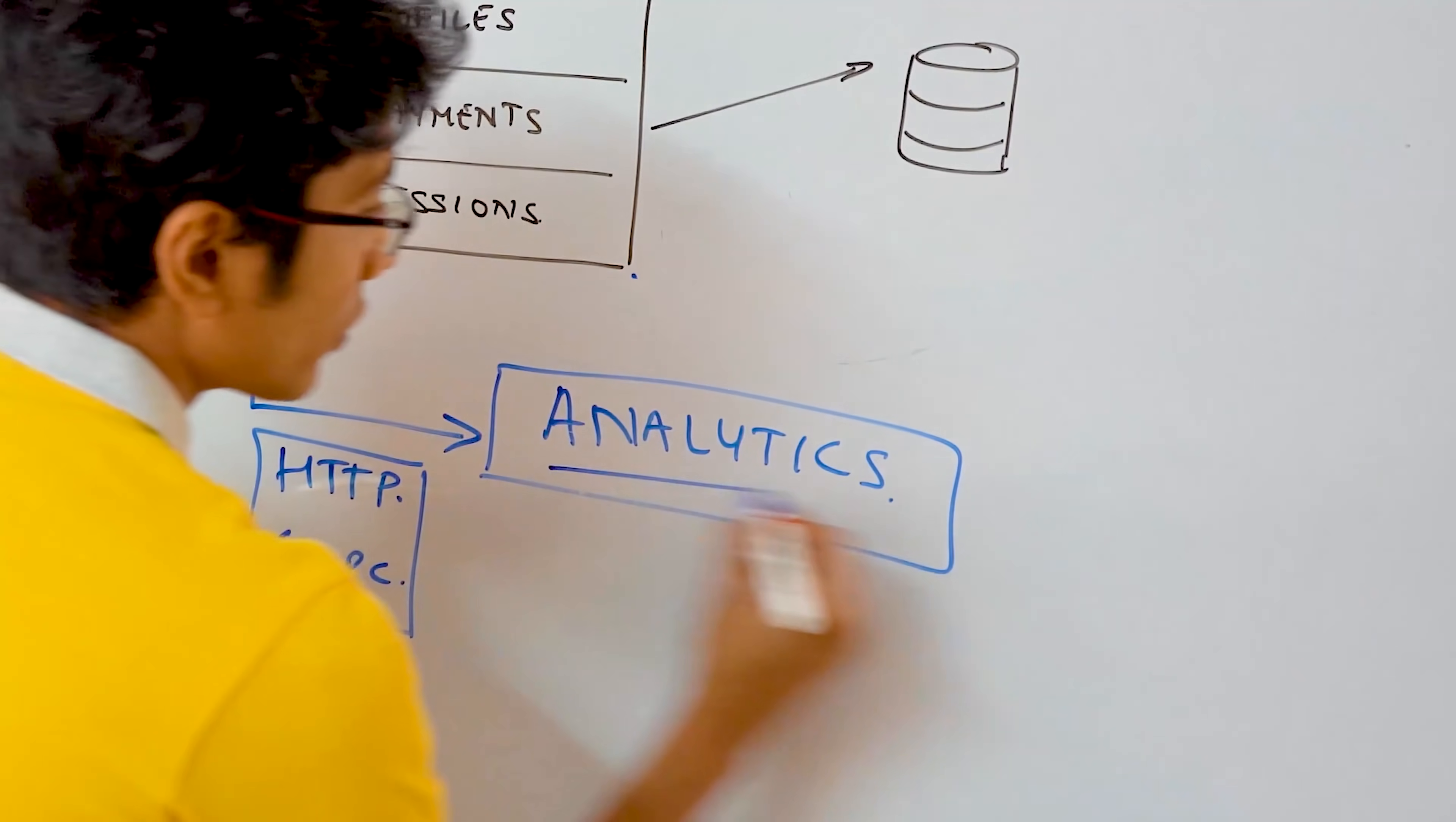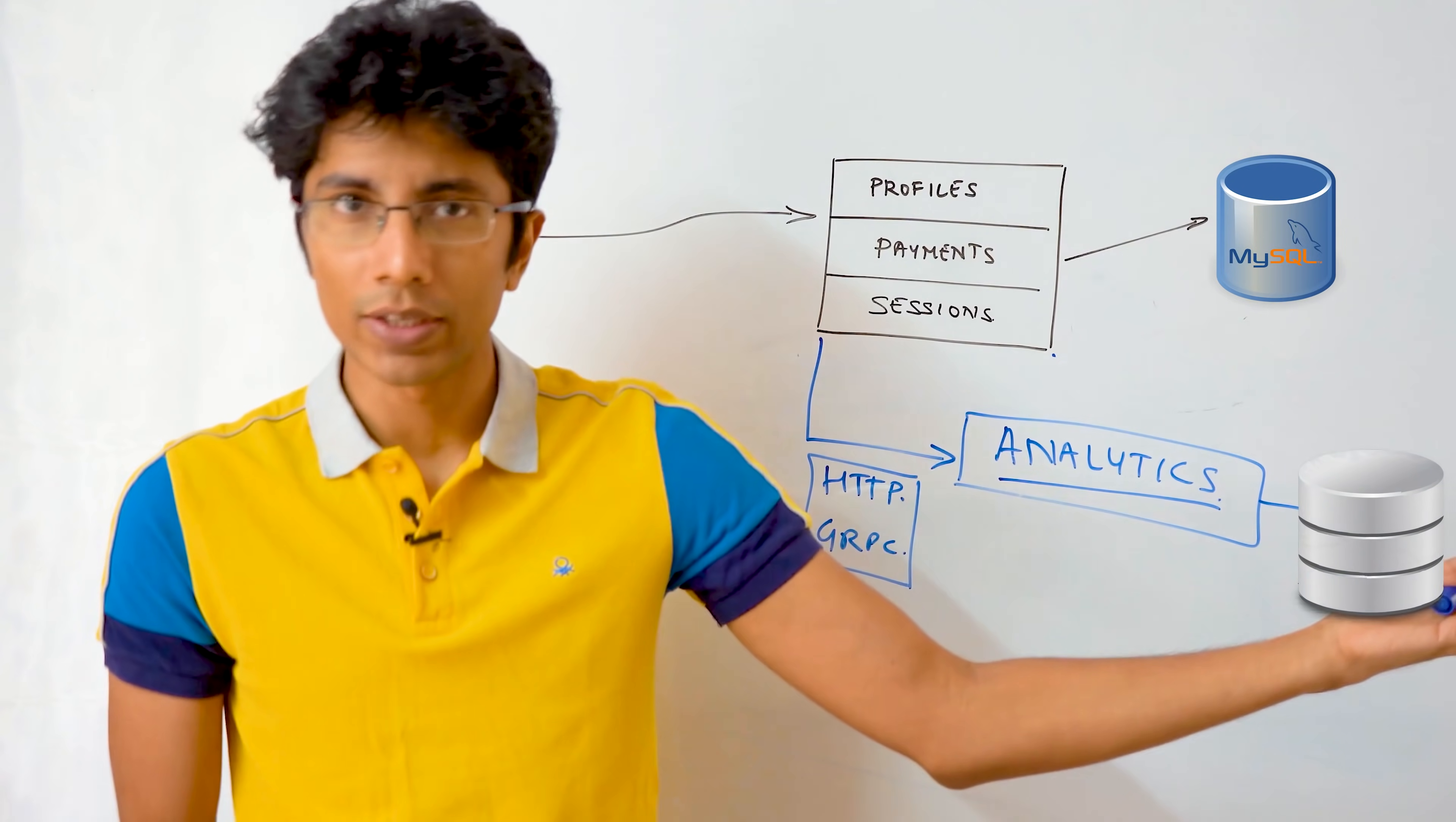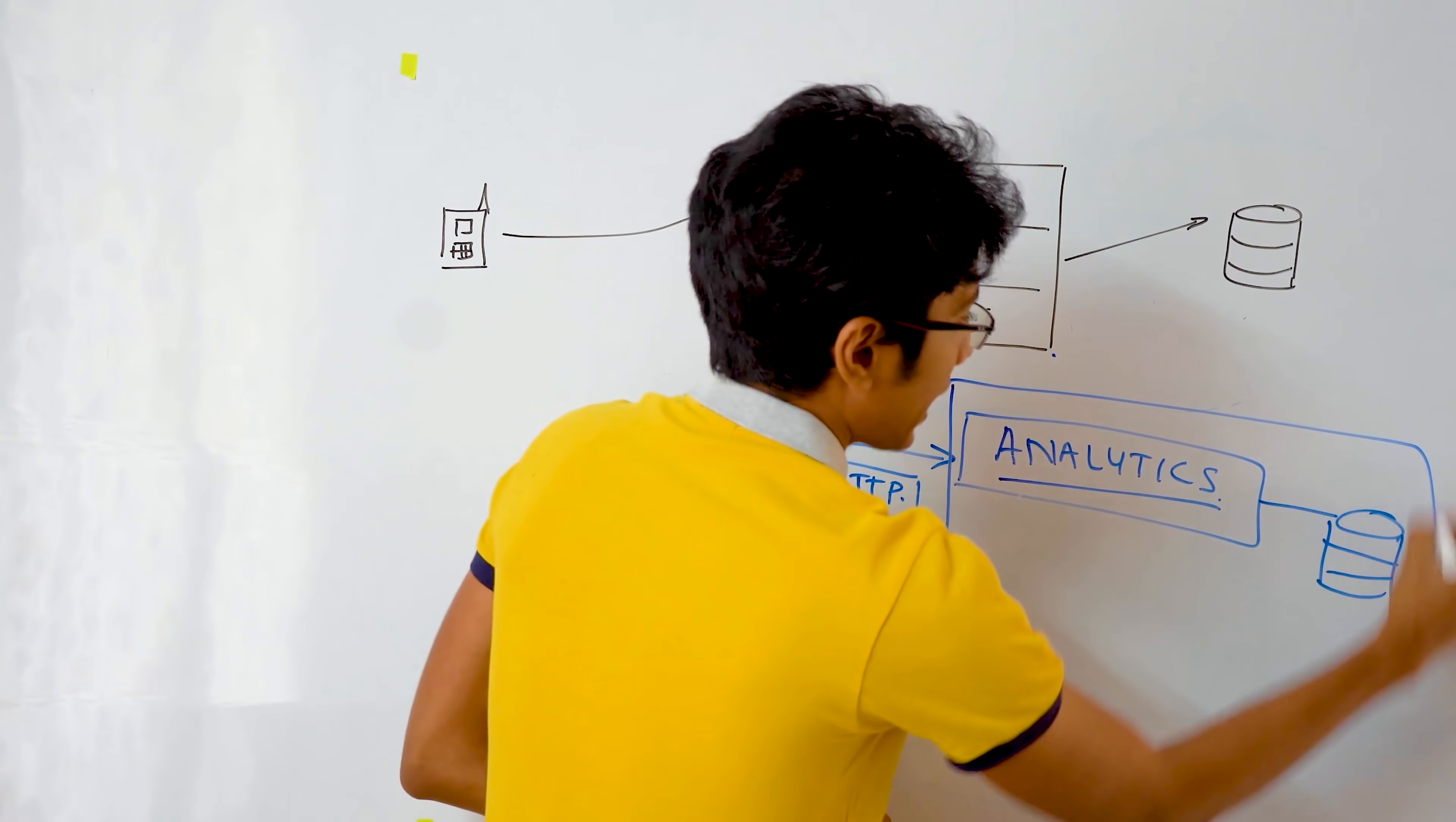And the analytics service will also have its own database, which may be the same as this database. Let's say, if this is MySQL, then you might end up using MySQL here also, but you might use a NoSQL database also like Amazon DynamoDB, Cassandra, anything. There's an isolation of concerns when it comes to the analytics service.